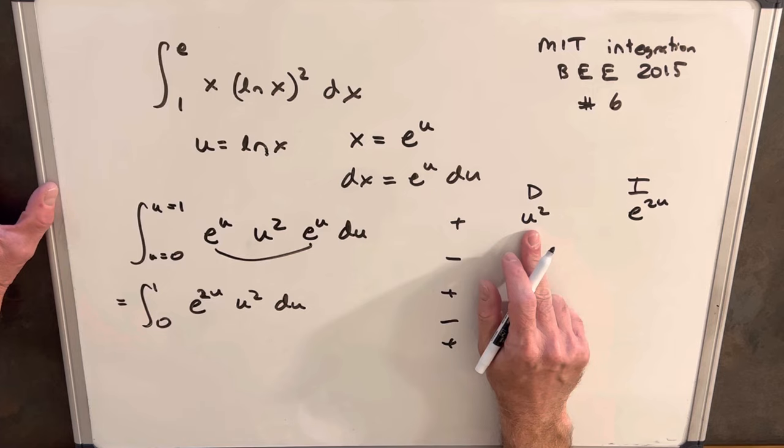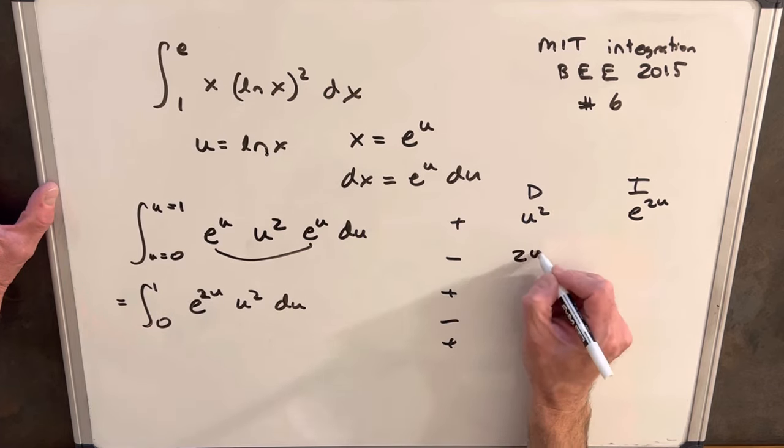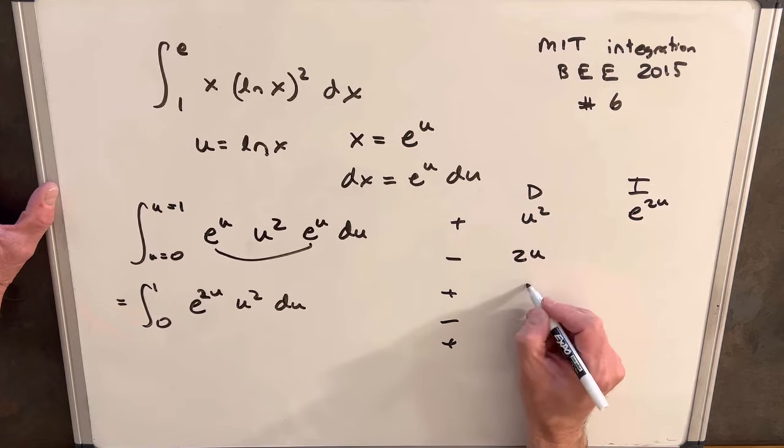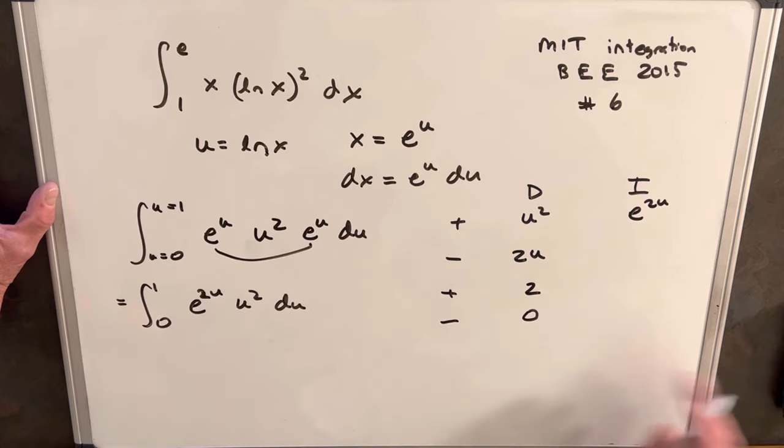We're going to differentiate u squared and we're going to integrate e to the 2u. Then the reason I chose to differentiate u squared is you'll see this is going to reduce. We differentiate u squared, we get 2u. Then we differentiate that, we get 2. And then we differentiate that and we get 0. And so that'll terminate there because then we won't have an integral because this line is going to be 0.